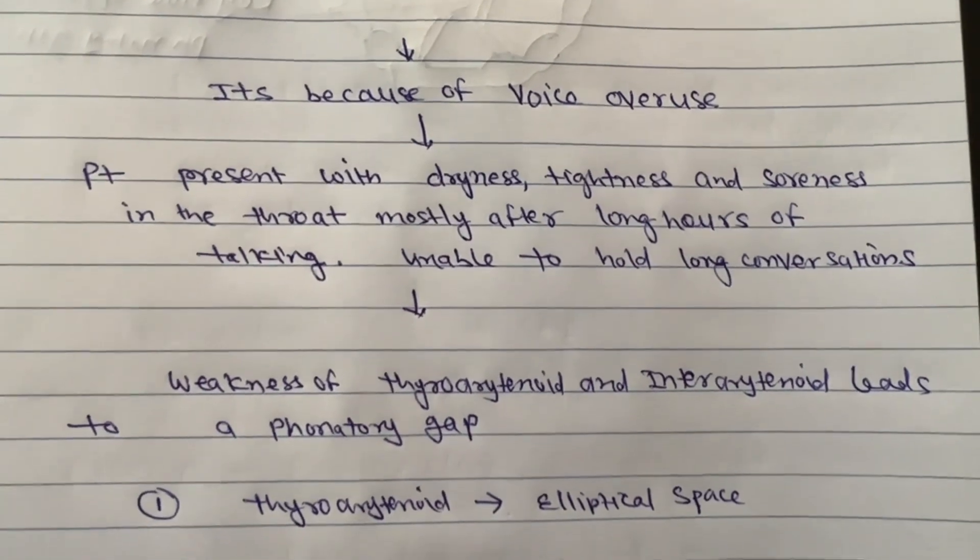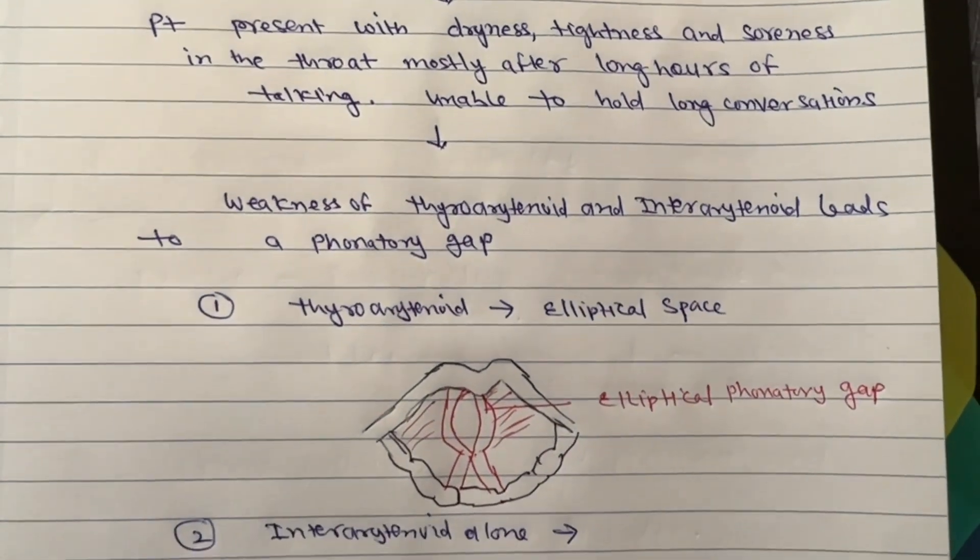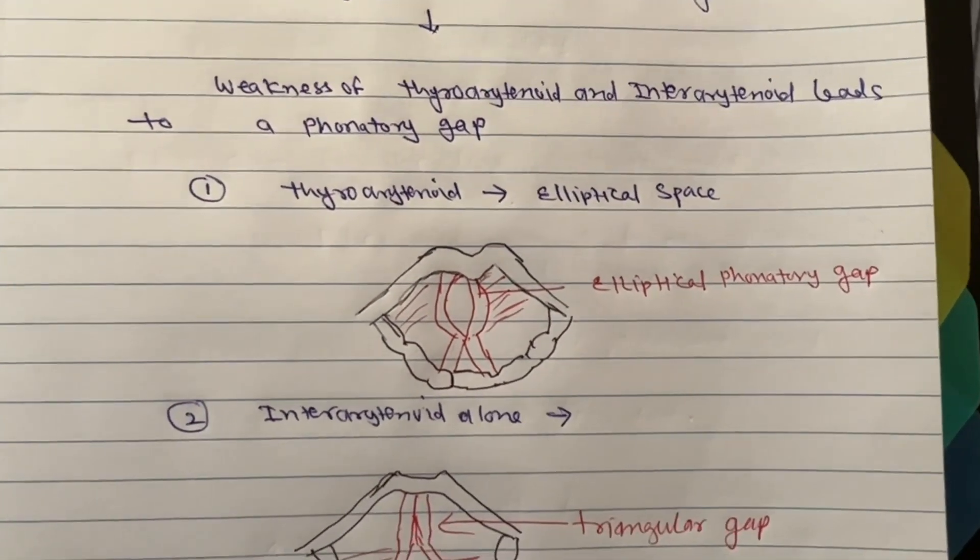Weakness of thyroarytenoid and interarytenoid muscles leads to phonatory gap. If thyroarytenoid muscle is involved, there will be an elliptical gap, as you can see in this picture.